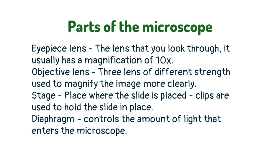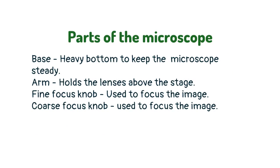Stage — the place where the slide is placed; clips are used to hold the slide in place. Diaphragm — controls the amount of light that enters the microscope. Base — heavy bottom to keep the microscope steady. Arm — holds the lenses above the stage. Fine focus knob — used to focus the image. Coarse focus knob — used to focus the image.